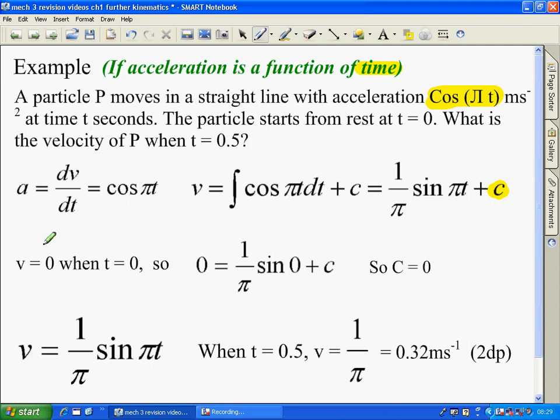A lot of people forget that. So, initial conditions: v is 0 when t is 0, so c is 0. So your equation relating v to t is v equals 1 over pi sine pi t. So when t is 0.5, v is 1 over pi, which is 0.32 metres per second to two decimal places.